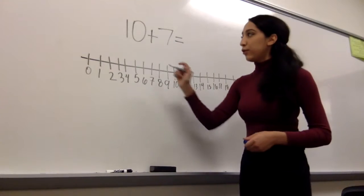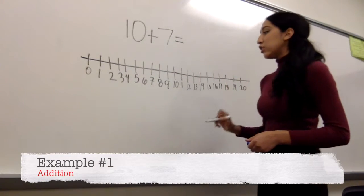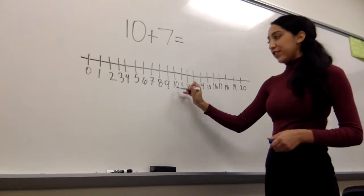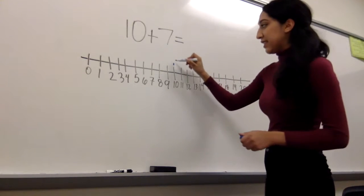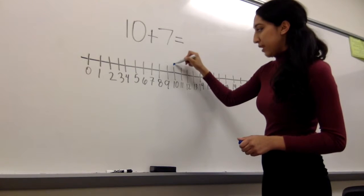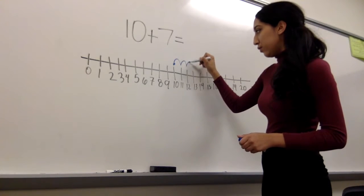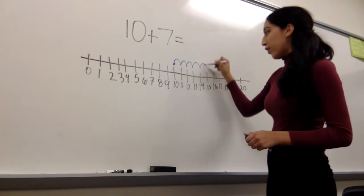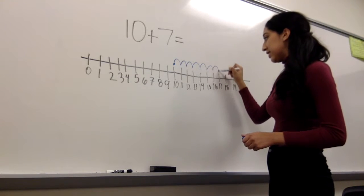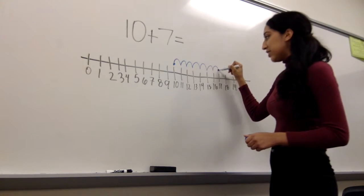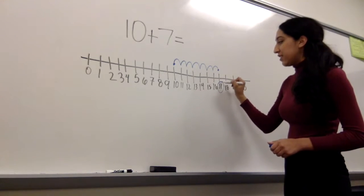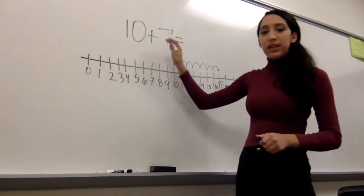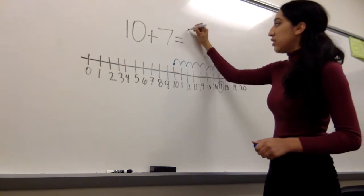First example will be 10 plus 7. So you'll go ahead and start at the 10. And the bunny hop method is a rabbit jumping. 1, 2, 3, 4, 5, 6, 7. Once you get to the 7, you draw another dot. And then you circle the 17. So 10 plus 7 equals 17.